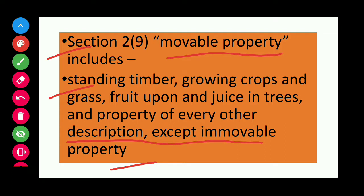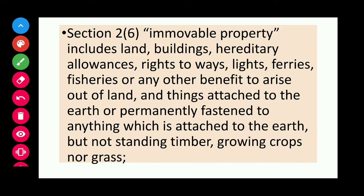Under the Registration Act 1908, immovable property is defined under Section 2, Subsection 6. Immovable property includes land, buildings, hereditary allowances, right to ways, lights, ferries, fisheries, or any other benefit to arise out of land, and things attached to the earth or permanently fastened to anything attached to the earth.